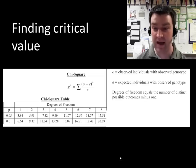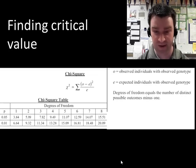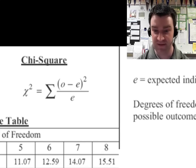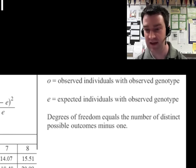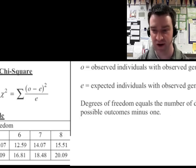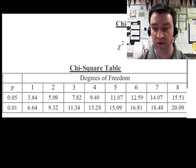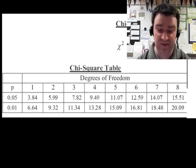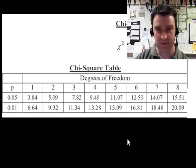This critical value table is taken straight from the equation sheet provided by the College Board for your AP test. They've given you the equation for chi-squared and its calculations, so you don't have to memorize it. They tell you what all the variables mean, and then they give you the appropriate table of critical values. In order to find the critical value, we need to find the appropriate p-value and the appropriate degrees of freedom.